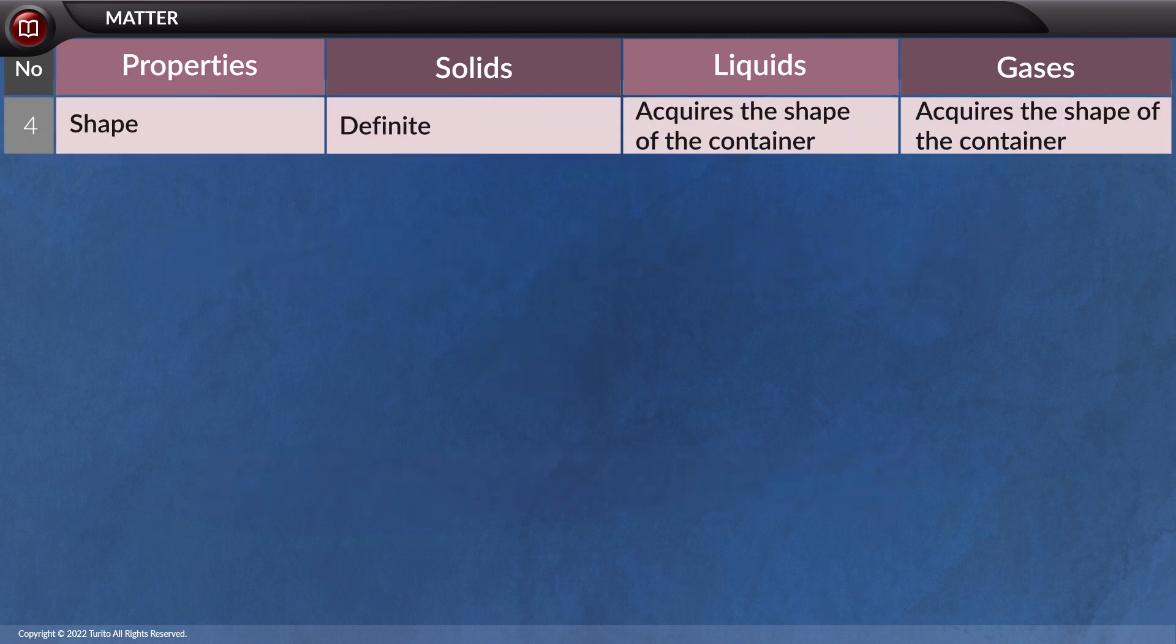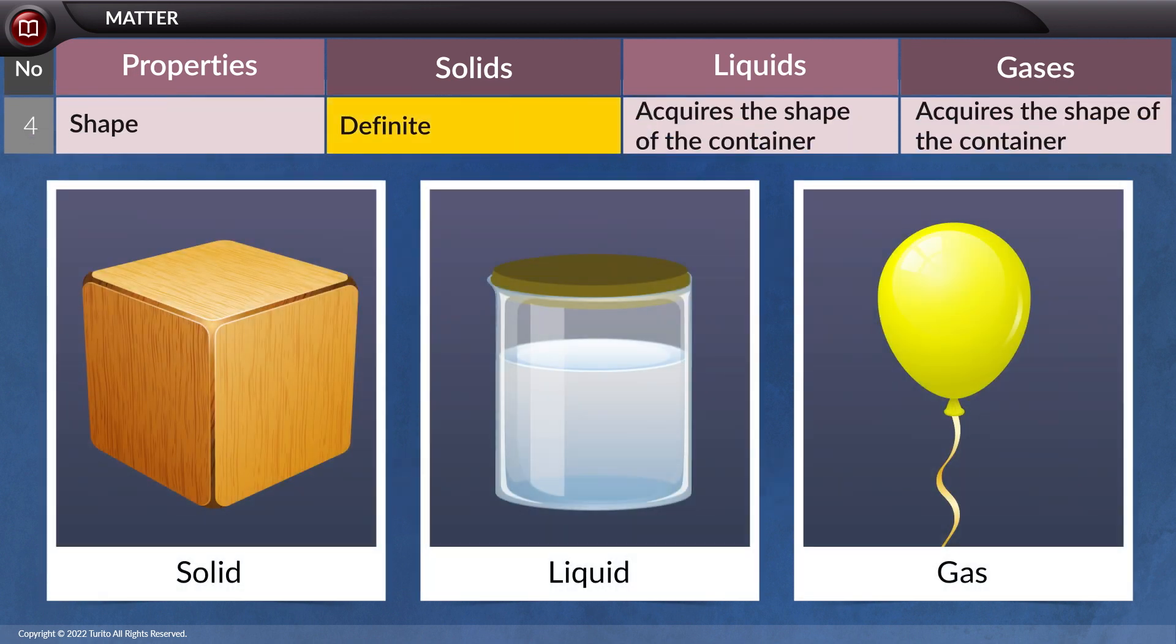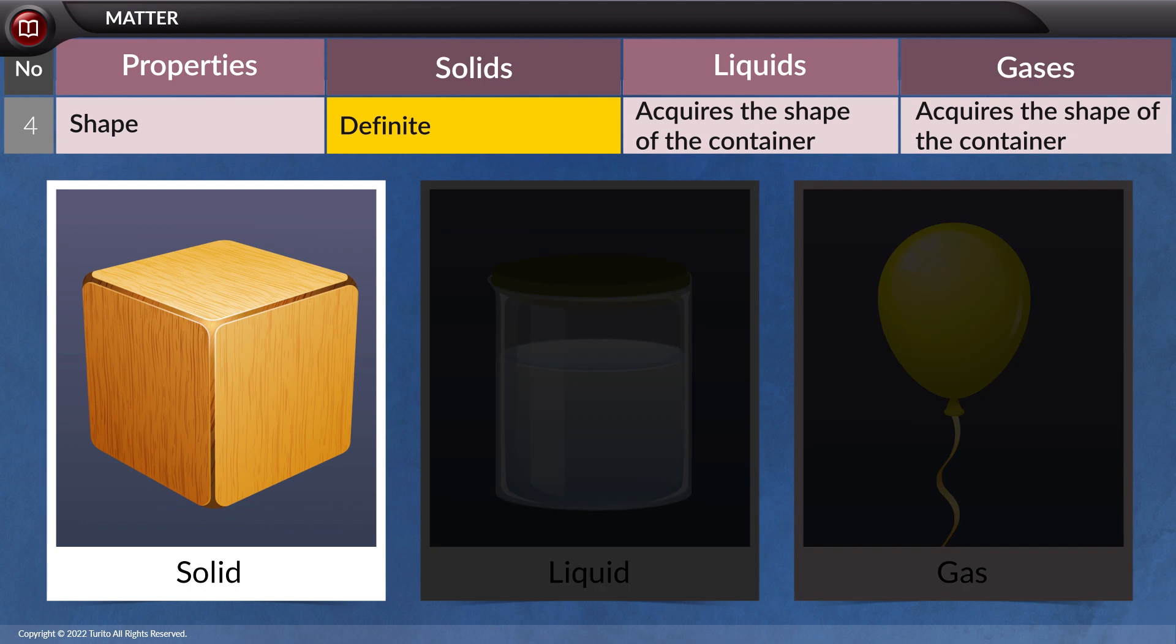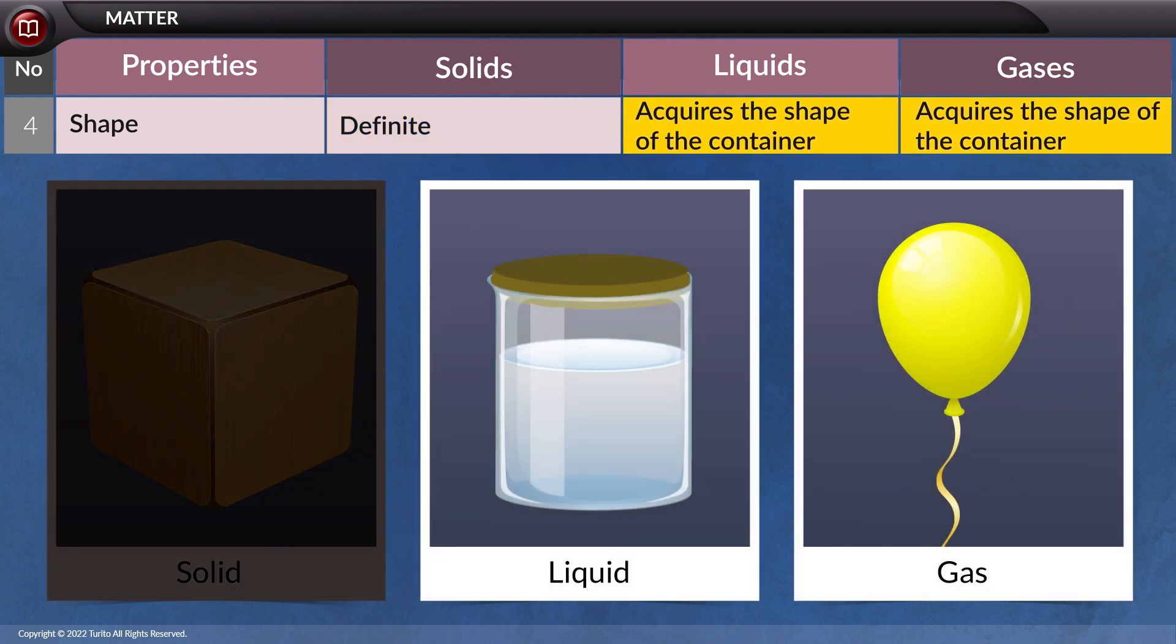The next property is the shape. Solids have a defined shape due to the strong intermolecular interactions. When it comes to liquids or gases, comparably fewer forces of attraction operating between them lead them to take the shape of the beaker or container in which they are contained.